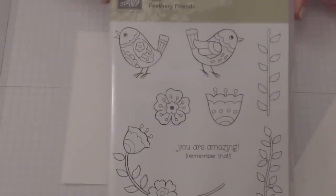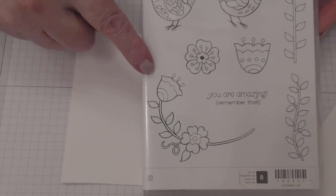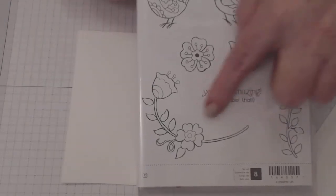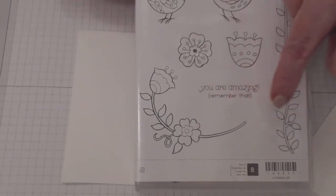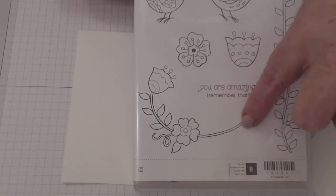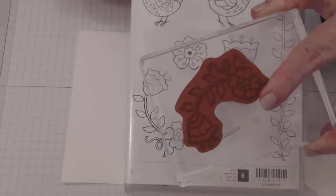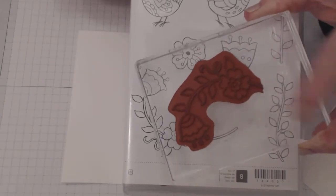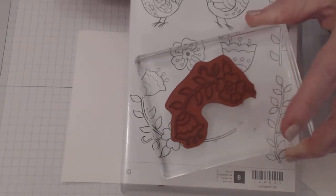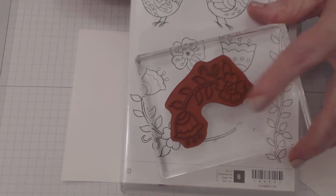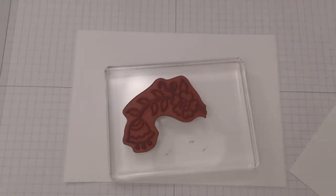This little bit of the flourish was just annoying me because it was a little bit too long for my liking, so I've just cut it off. I know people do that with the polymer stamps. I cut it off because it just works a lot better. I just found it a little bit too long in terms of the design.